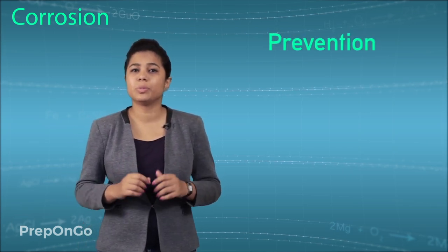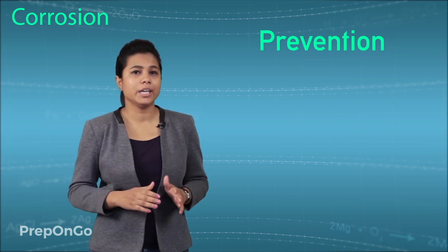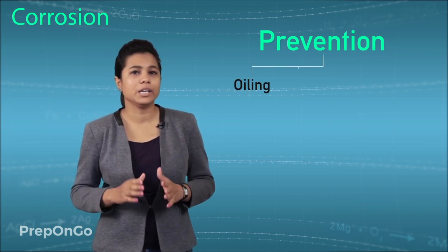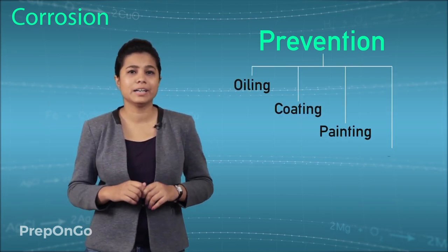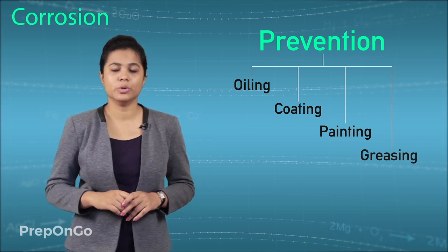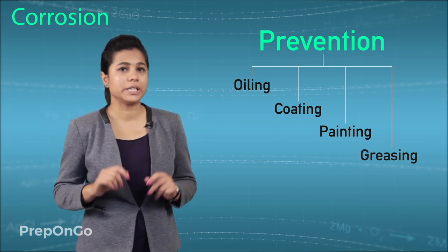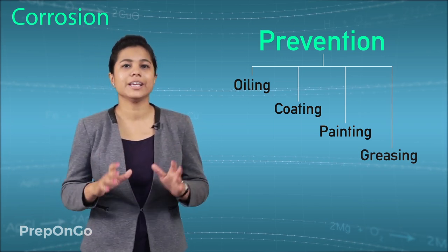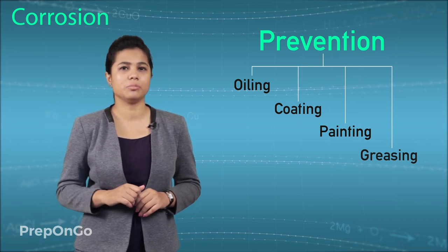There are many methods to prevent corrosion, like oiling, coating, painting, and greasing. These were very few. We are going to see these methods in detail in our next chapter, which is metals and non-metals.